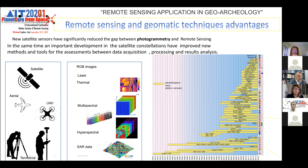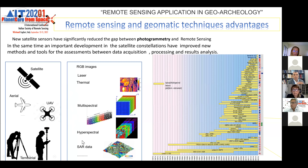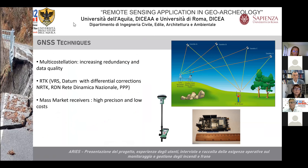From a satellite or aircraft with many sensors, we can acquire RGB images, laser data, thermal images, multispectral, hyperspectral data, and we can work also with radar data. At the same time, an important development in satellite constellations has improved new methods and tools for the assessment of data acquisition, processing, and result analysis. The survey techniques have also seen great improvement.